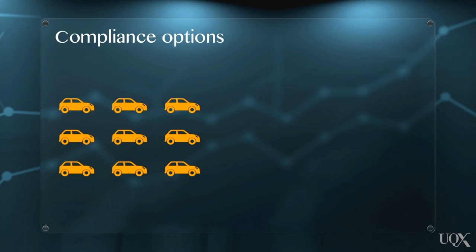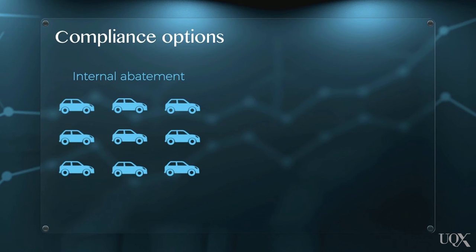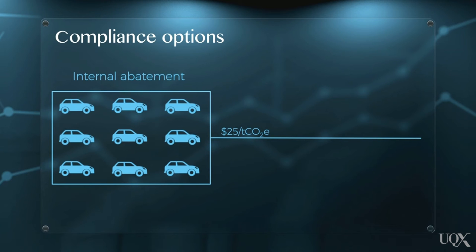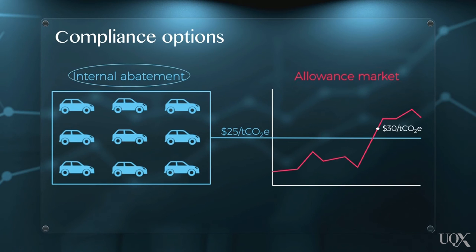Let's say a company has the option to upgrade its vehicle fleet at a cost of $250,000, thus reducing its emissions by 10,000 tonnes — this would cost the company $25 per tonne of avoided CO2e. If the company had an alternative option to buy allowances from the carbon market for $20 per tonne, then the company will rationally choose to buy allowances instead of upgrading its vehicle fleet. However, if allowances cost $30 per tonne of CO2e, then reducing the company's emissions at $25 per tonne is clearly the better option. In summary, if it is less costly for a company to reduce their emissions than to buy allowances, they will do so, and vice versa.